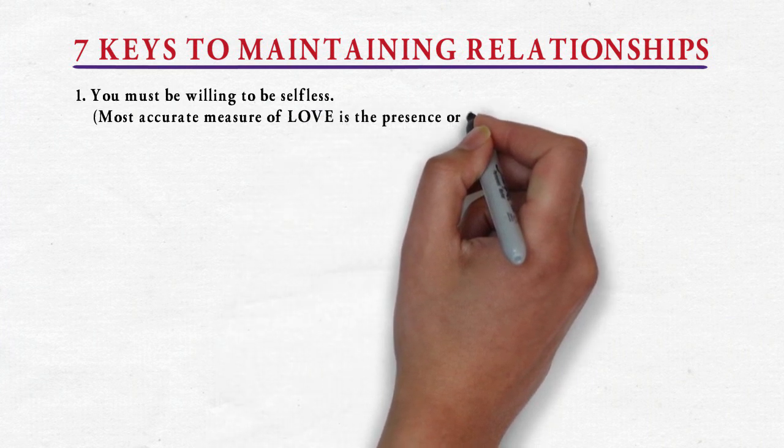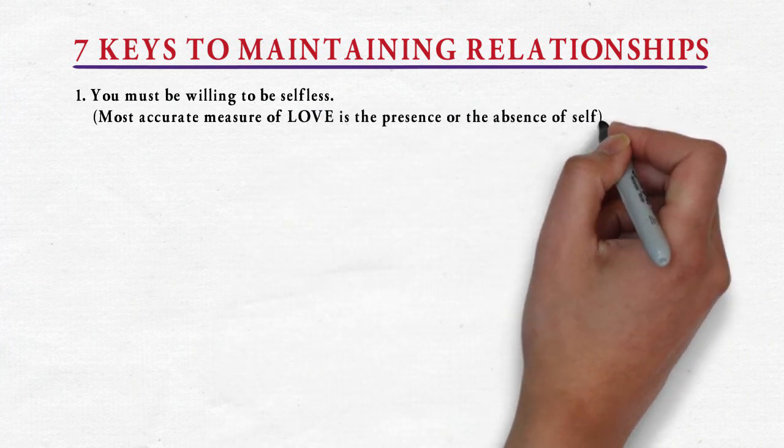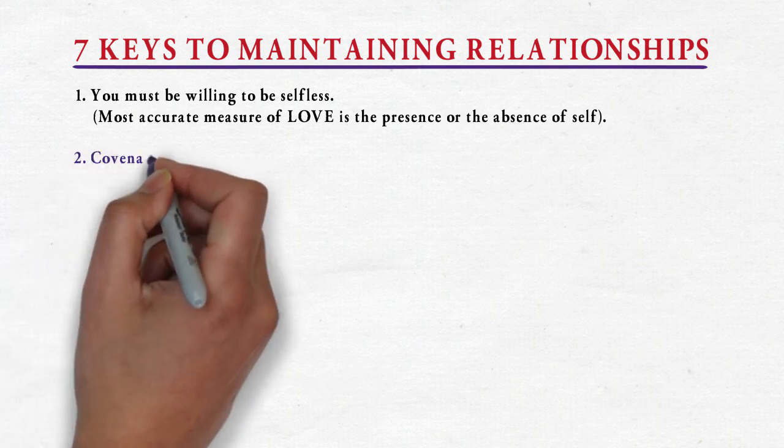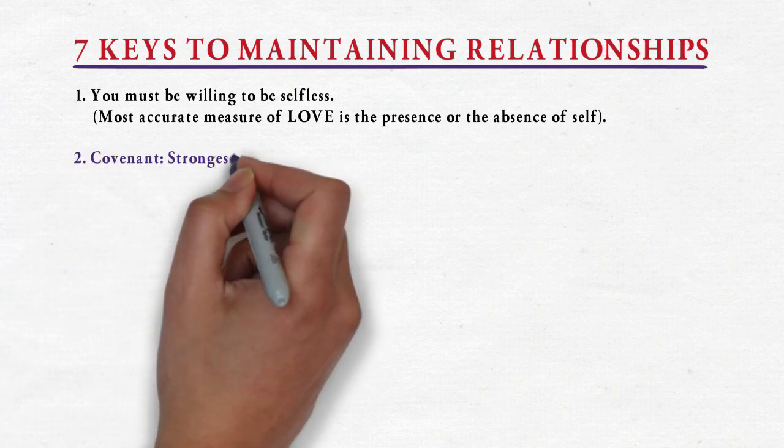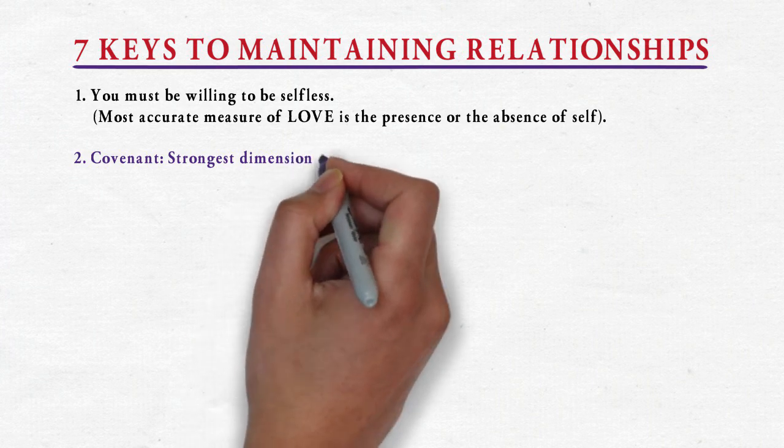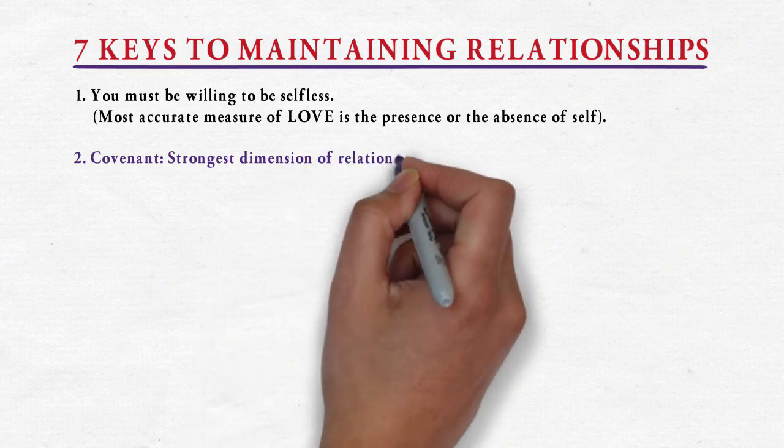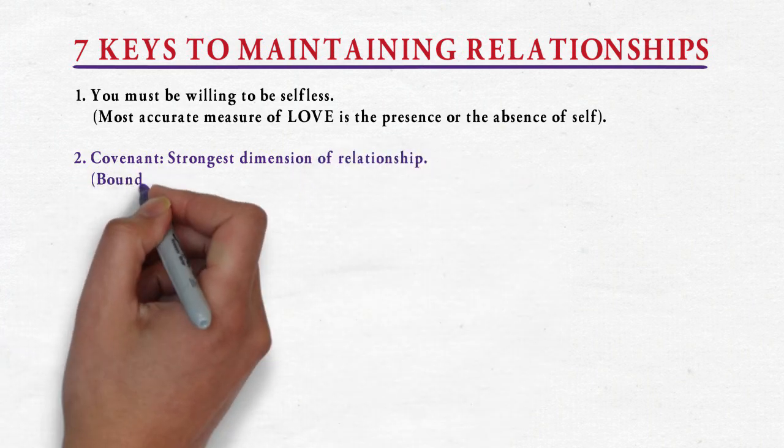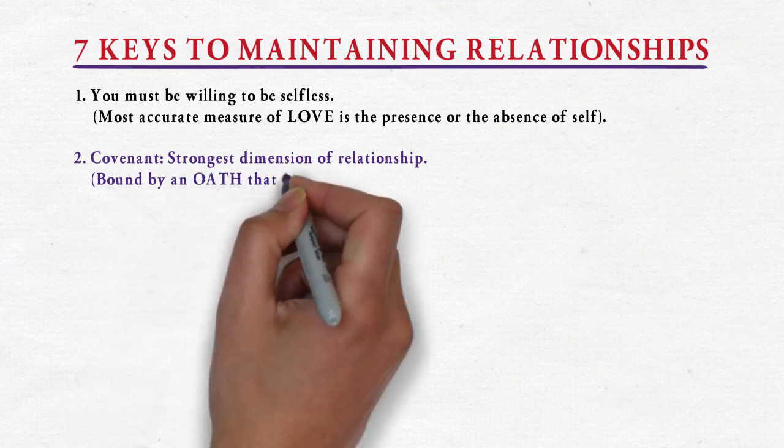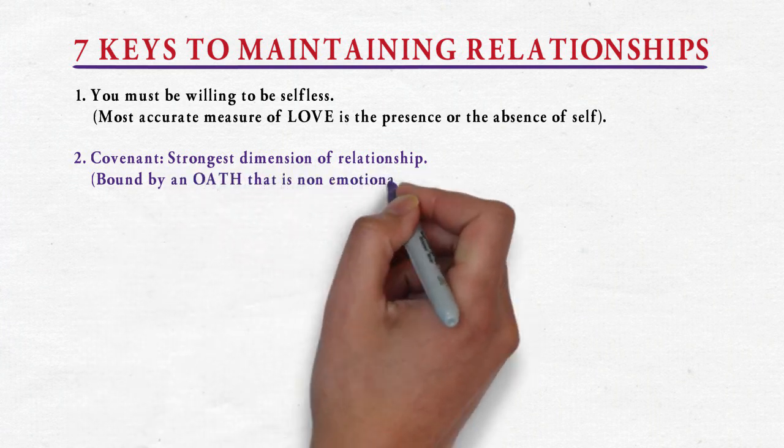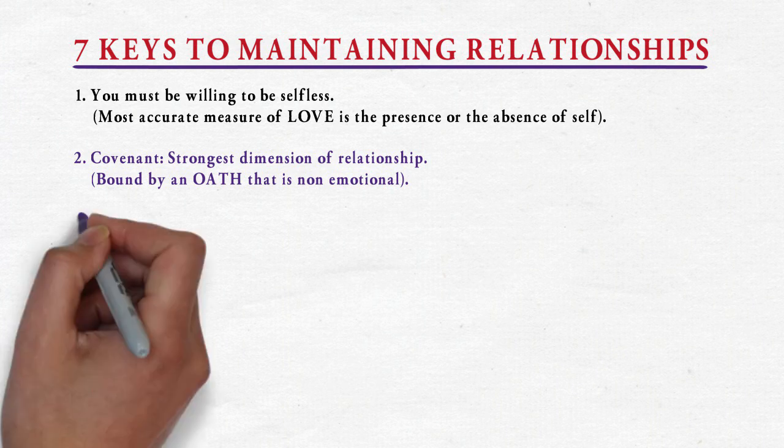Covenant is the strongest dimension of relationship because it is bound by an oath that is non-emotional. Covenant gives the parties involved in the relationship security. Number three: avoid backbiting and evil speaking.